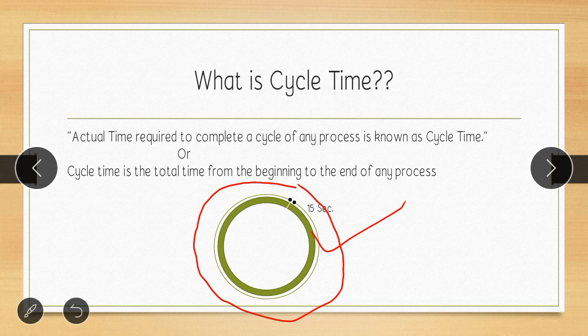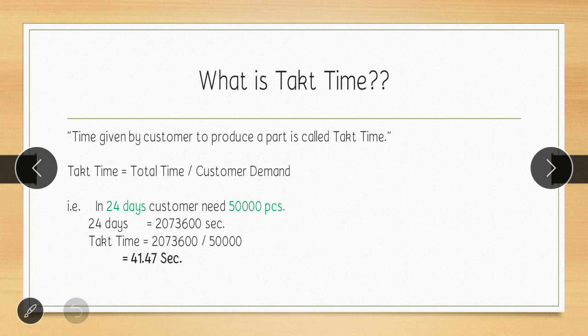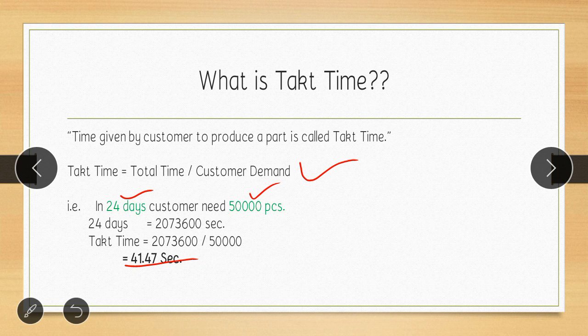Then what is takt time? Takt time is the time given by the customer to produce a part — it depends upon customer demand. For example, if a customer requires 50,000 pieces in 24 days, we divide total available time by 50,000 pieces, which gives us 41.47 seconds. So takt time is 41.47 seconds, meaning we need to produce one part within that time.